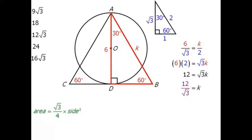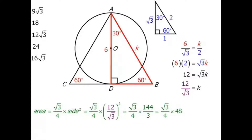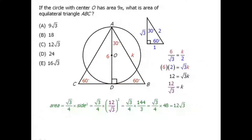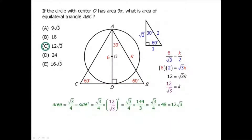We now know the length of all three sides of our equilateral triangle. Plugging this length into our original equation, we simplify 12 over root 3 all squared. Simplifying the fraction 144 over 3, and multiplying gives us 12 root 3. So our answer is C.